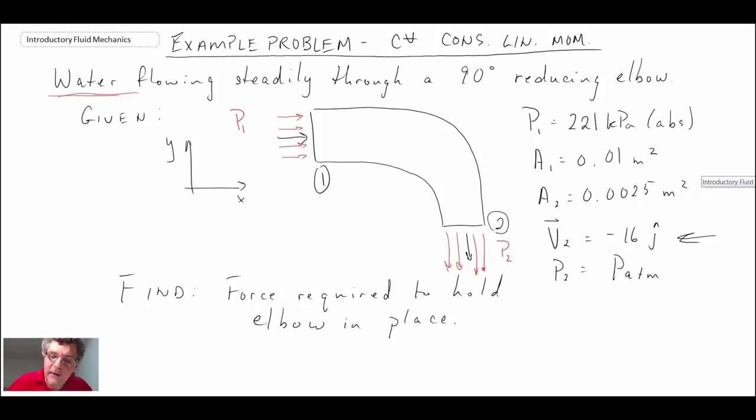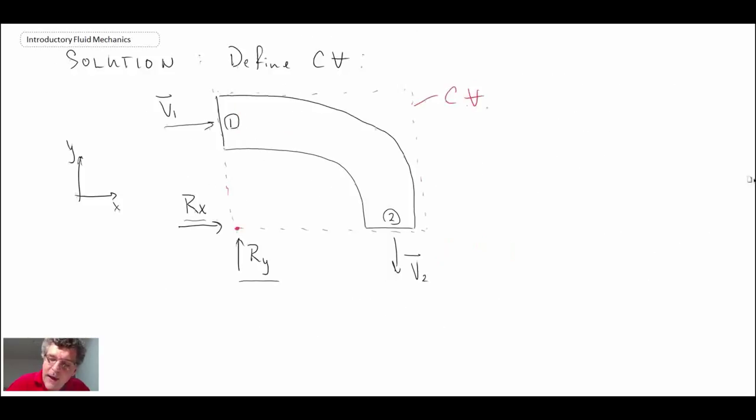What we did in the first part of the problem is we used the conservation of mass to determine v1, the velocity coming into the elbow. Now that we're equipped with v1, we can apply the conservation of linear momentum, the control volume formulation of it, to this elbow. Looking at our free body diagram, what we're after is we're trying to determine the reaction forces, rx and ry. So we'll start with the x component and then we'll move to the y component of the conservation of linear momentum.